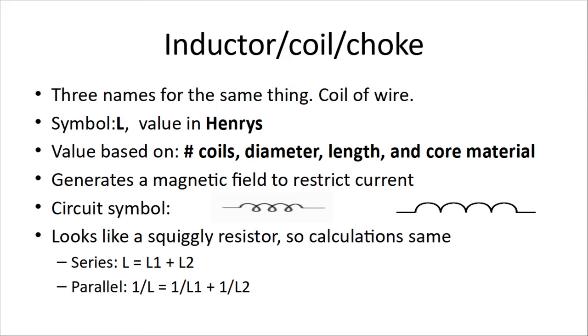In parallel, the same thing. We add up the inverses. And the same as the resistors, we can cheat. If it's two 100 Henry coils, and they're in parallel, we can divide 100 by 2, and we get 50 Henrys when they're in parallel.